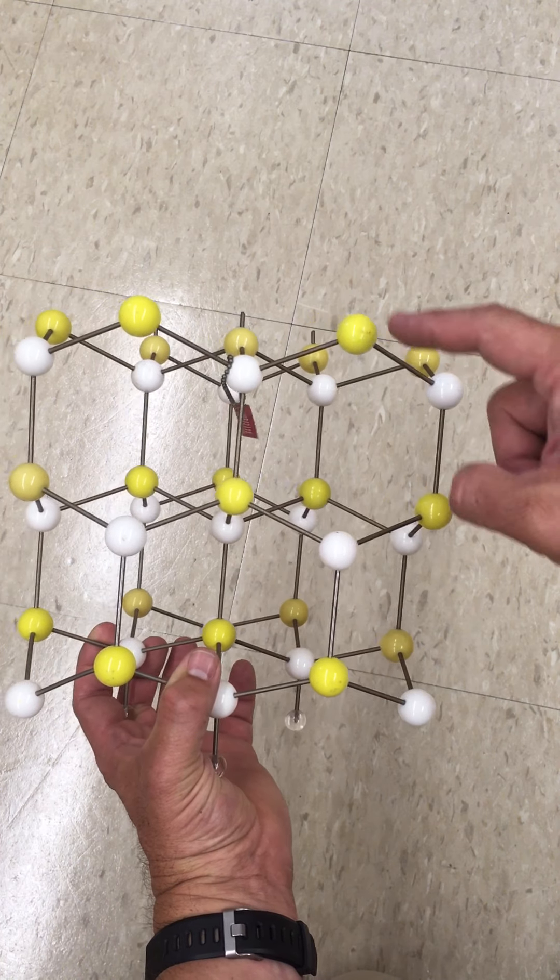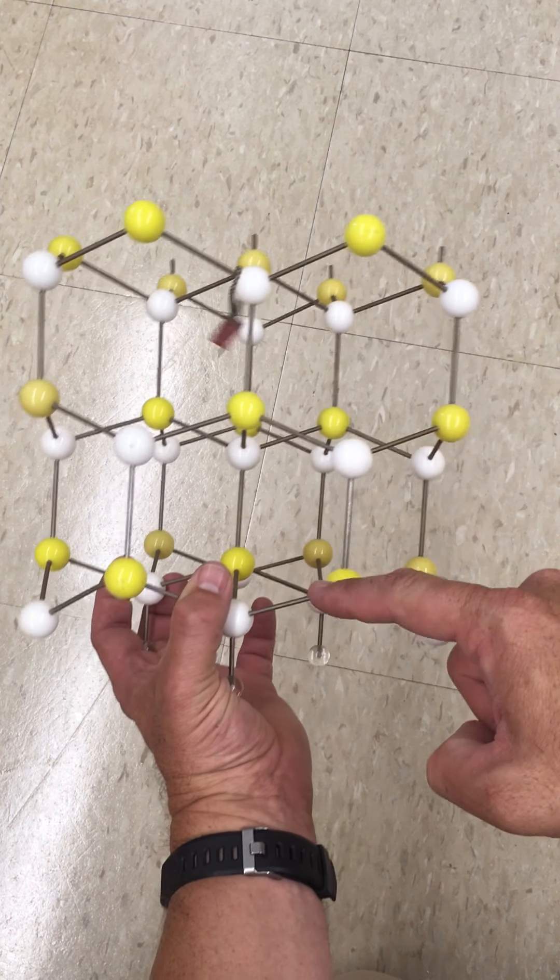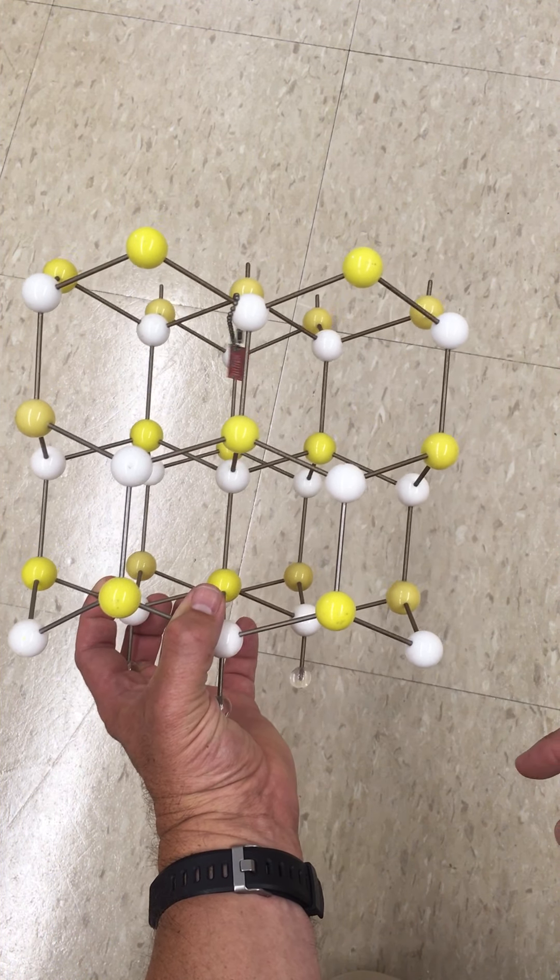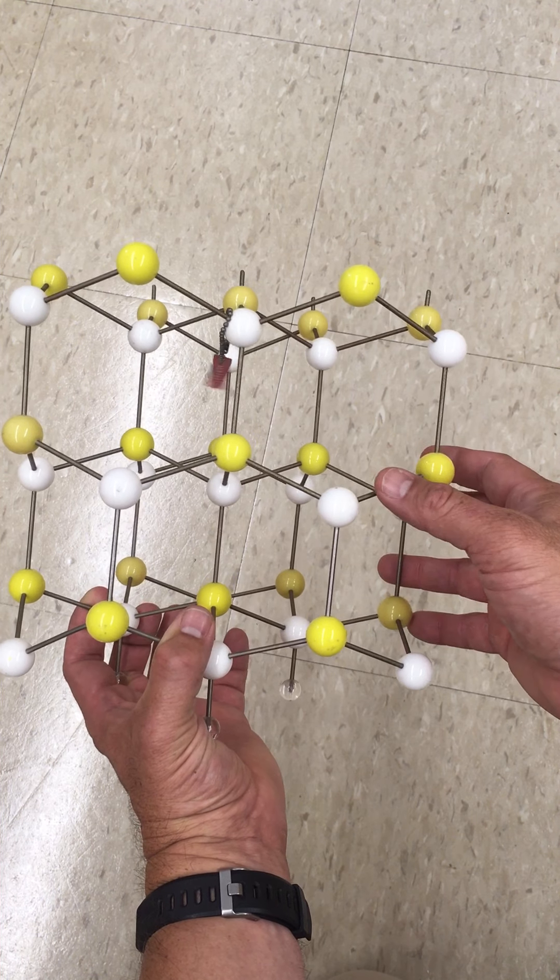But here we have an A, B, A type arrangement of the sulfide layers. There's no C layer.